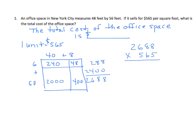Working along here: 5 times 8 is 40 — regroup my 4. I have 5 times 8 again, which is 40, plus 4 is 44 — regroup. 5 times 6 is 30, plus 4 is 34 — regroup. And 5 times 2 is 10, plus 3 is 13. Moving along, now I'm multiplying from the tens place, so I put in my zero. 6 times 8 is 48 — regroup. 6 times 8 is still 48, plus 4 is 52 — regroup. 6 times 6 is 36, plus 5 is 41. And 6 times 2 is 12, plus 4 is 16.